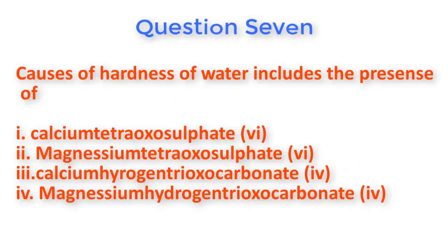Question number seven: Causes of hardness of water include the presence of — one: calcium tetraoxosulfate(VI); two: magnesium tetraoxosulfate(VI); three: calcium hydrogen trioxocarbonate(IV); and four: magnesium hydrogen trioxocarbonate(IV).